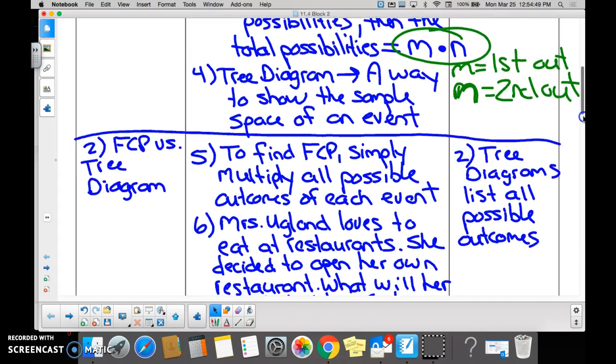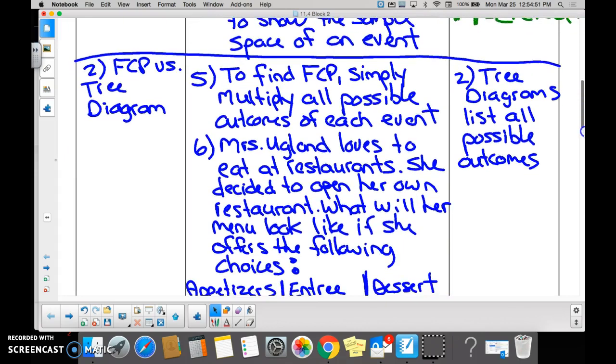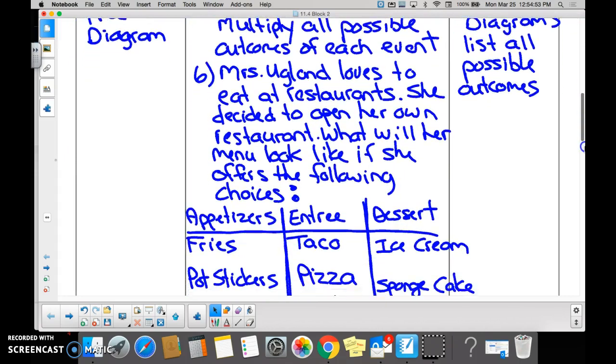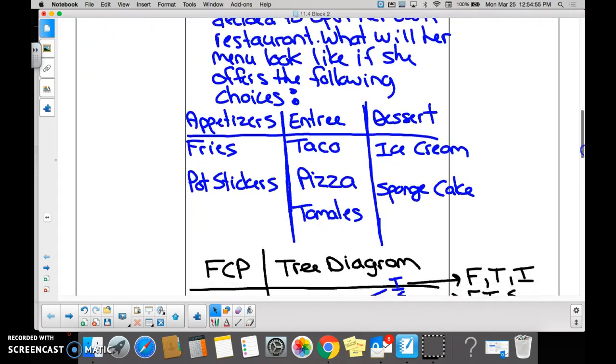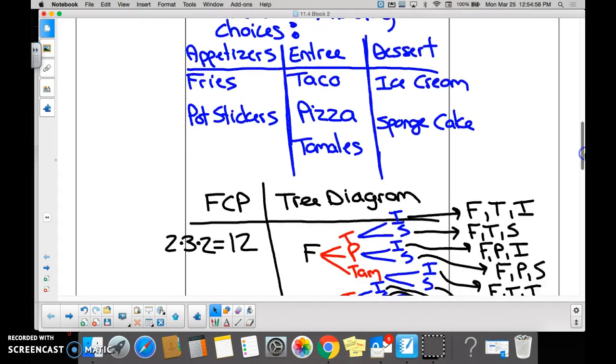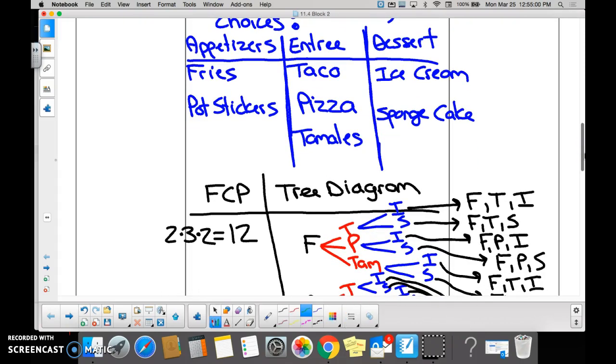Mrs. Jugolin owns a restaurant, and on her restaurant she offers two appetizer choices, three entrée choices, and two dessert choices. What we want to know is how many different things go on her menu.